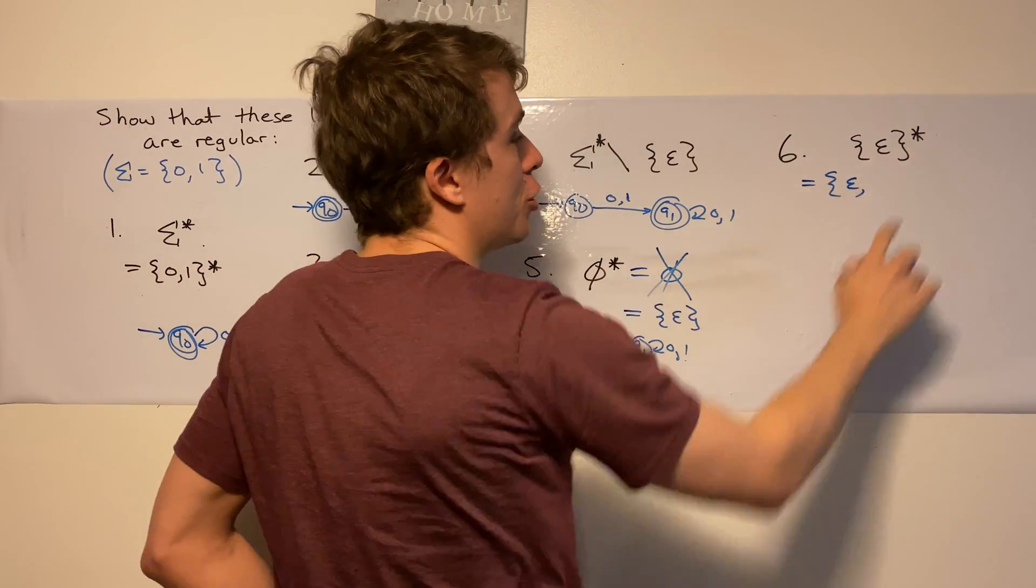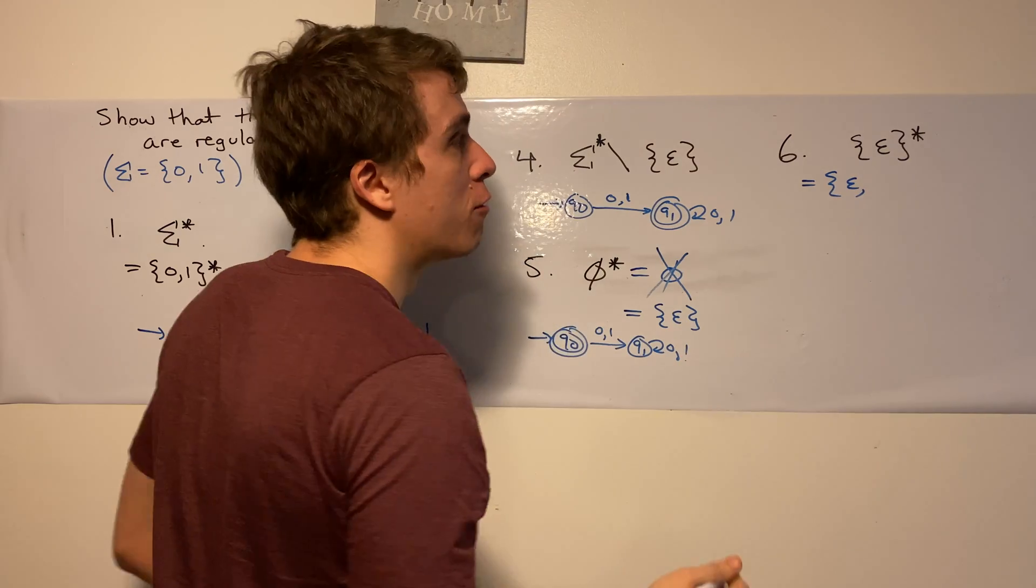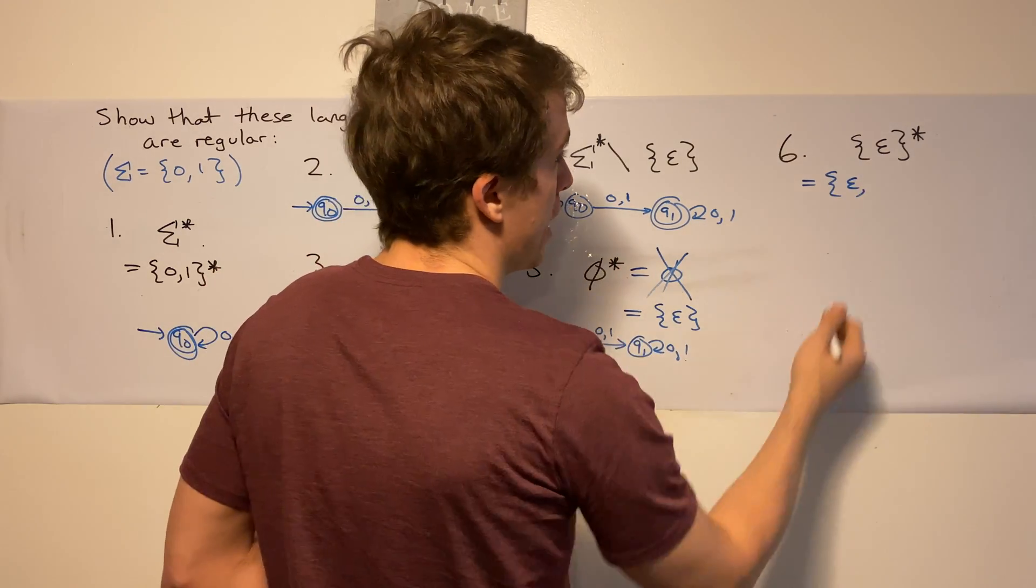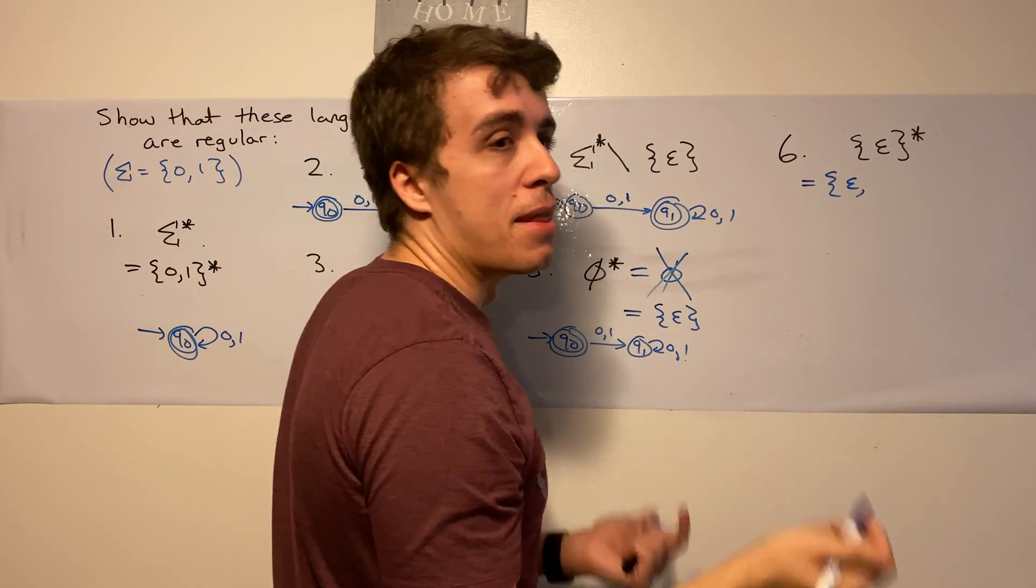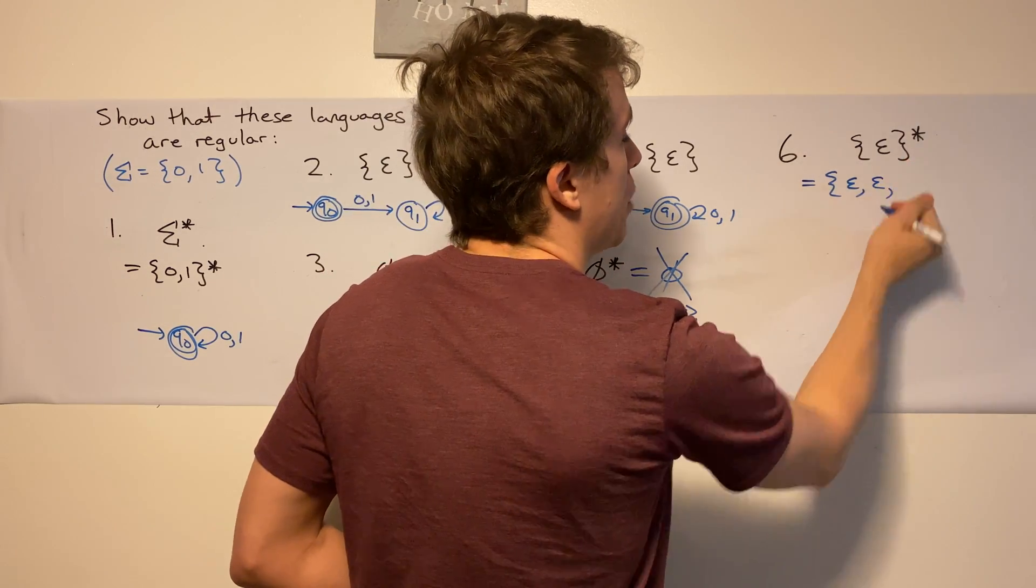Then we can pick one thing from the language and put it in. Well, if we pick the empty string, and that's what we get. So we get the empty string here. And then if we pick two things from the language and put them together,